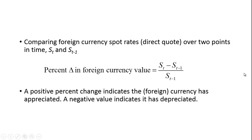Comparing foreign currency spot rates: spot rates simply refer to the rates for immediate delivery. Using the direct quote and two spot rates over two points in time — time t and time t minus one — where the spot rate at time t is S sub t and at time t minus one is S sub t-1, the percentage change in the currency's value is (S_t minus S_{t-1}) divided by S_{t-1}. A positive percentage change indicates the foreign currency has appreciated; a negative value indicates it has depreciated.